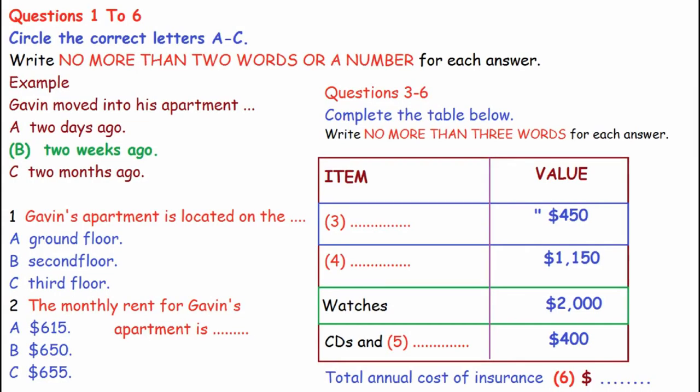Gavin, a newly arrived student, wants to insure the contents of his apartment. He calls an insurance agent to ask for information. First, you have some time to look at questions 1 to 6. You will see that there is an example that has been done for you. On this occasion only, the conversation relating to this will be played first.